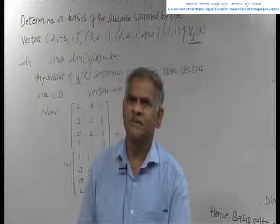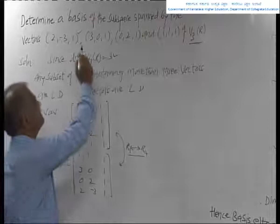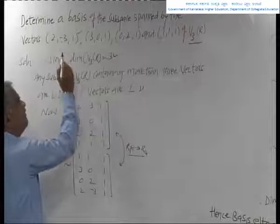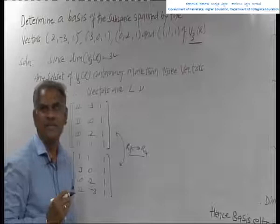We shall discuss some important examples on the basis of the subspace spanned by vectors. The first example: determine a basis of the subspace spanned by the vectors (2, -3, 1), (3, 0, 1), (0, 2, 1), and (1, 1, 1) of V3r. V3r means the vector space over the real field containing 3-component vectors.